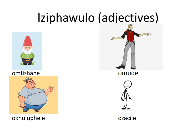Opposites also come from izipawulo — adjectives. Umuntu omfeshane is a short man on your left hand side. Umuntu omude is a tall man on your right hand side. Another pair: okulu pele means fat, and its opposite is ozadil. So the opposite pairs are omfishane/omude and okulu pele/ozadil.